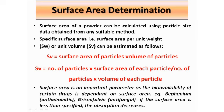The surface area is a very important parameter for determining the bioavailability of different drugs, among which two important drugs are: number one, Bephenium, which is an anthelmintic drug, and next is Griseofulvin, which is an antifungal drug. If the surface area of these particular drugs decreases, the absorption of the drug in the body also decreases. So while giving drugs like Griseofulvin or Bephenium, we have to determine the surface area of the drug prior to administration to the patient.